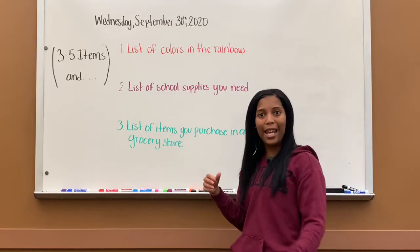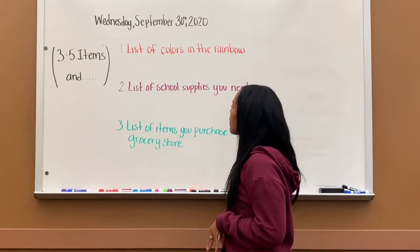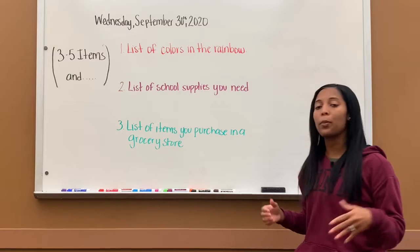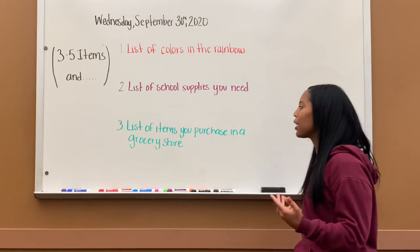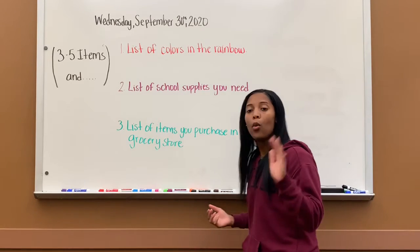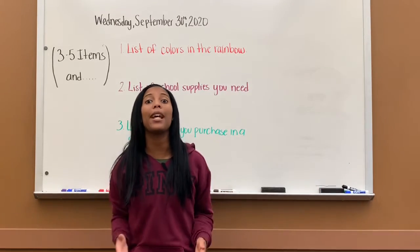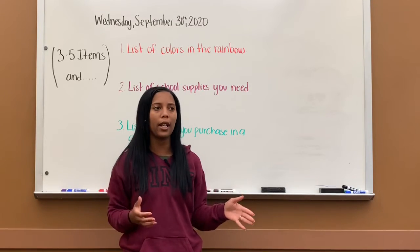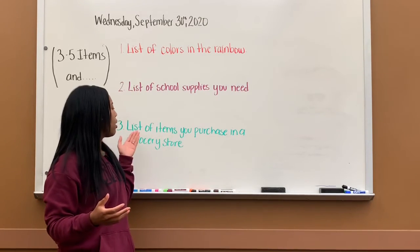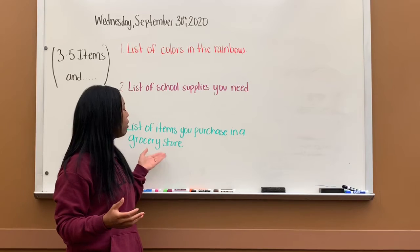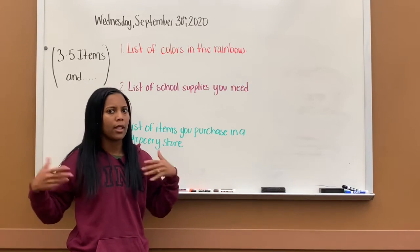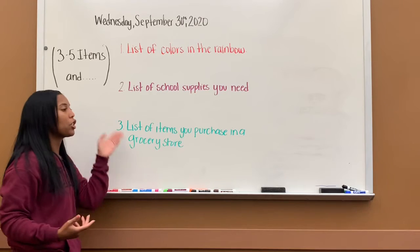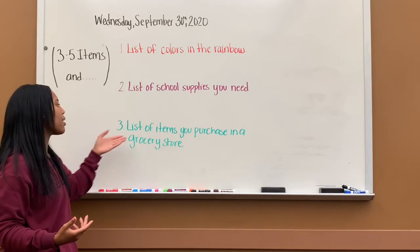Number three is a list of items you will purchase in a grocery store, so you will create a sentence. We are not just listing things — we are creating sentences. So you have to have a subject and a predicate. You can't just say 'cereal, milk' — that's not a sentence, you're just putting words. Make sure that you are creating sentences.